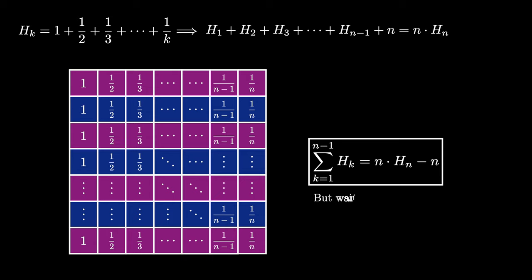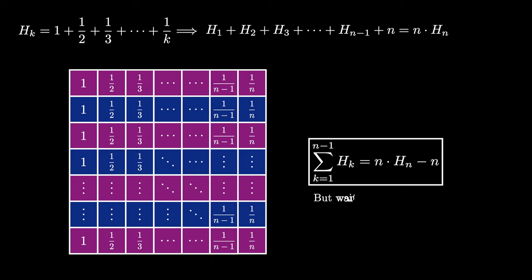But wait, there's more that we can do with this identity. We just proved visually that the sum of harmonic sums where k ranges from 1 to n minus 1 is equal to n times h sub n minus n. We can get an equivalent identity by adding h sub n to both sides.